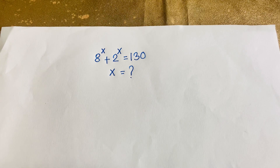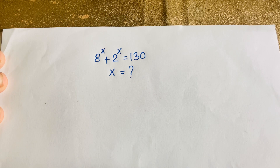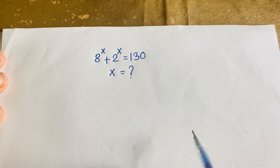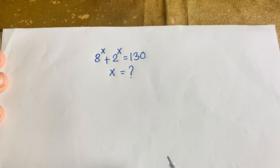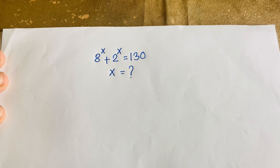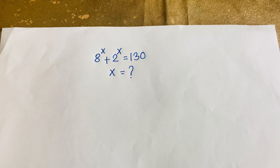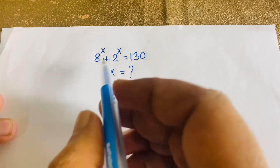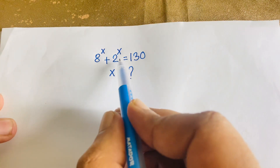Hello everyone. In this video we'll solve a Mexico Math Olympiad question: 8 to the power x plus 2 to the power x is equal to 130. What is x? It's an interesting exponential equation, so let's start.